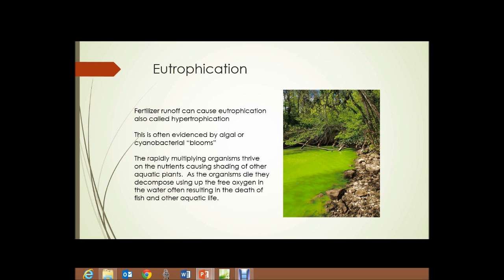Fertilizer runoff can cause eutrophication, also referred to as hypertrophication, and it's often evidenced by algal or cyanobacterial blooms. You can see in this photograph the green color of the water and the various shades of green. It's not the water — it's the result of billions and billions of cyanobacteria in the water, multiplying because of the amount of nutrients that have run off from surrounding fields.